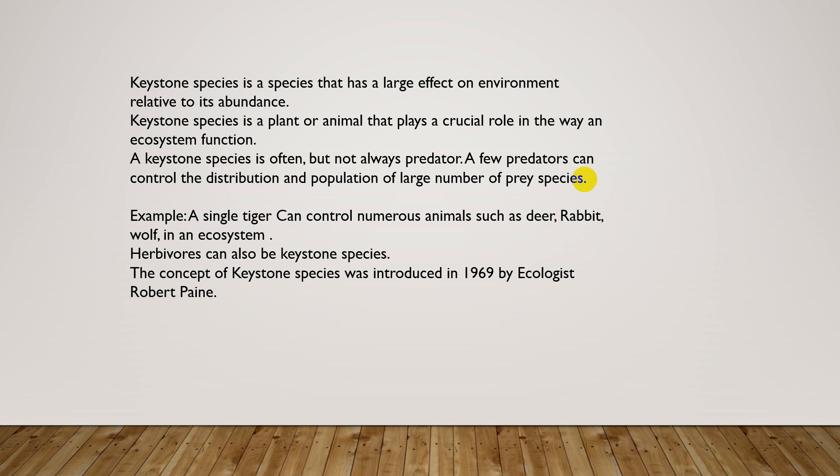A keystone species is a plant or animal that plays a crucial role in the way an ecosystem functions. It may be either a plant or an animal, and it helps in conserving ecosystem function. A keystone species is often, but not always, a predator — it may also be prey or a pollinator. A few predators can control the distribution and population of a large number of prey species.